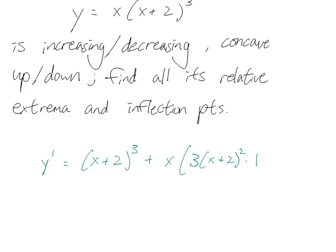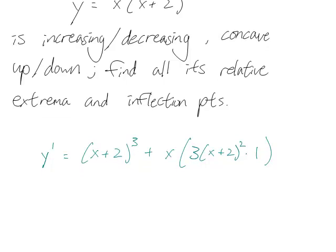Chain rule says we need to multiply by the derivative of x plus 2, so that's just 1. And so let's simplify this a little, this is x plus 2 cubed plus 3x times x plus 2 squared.